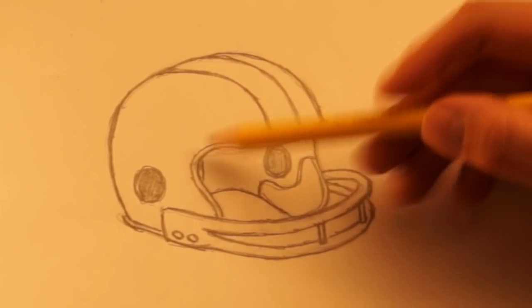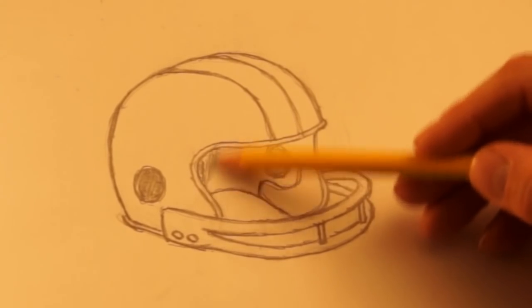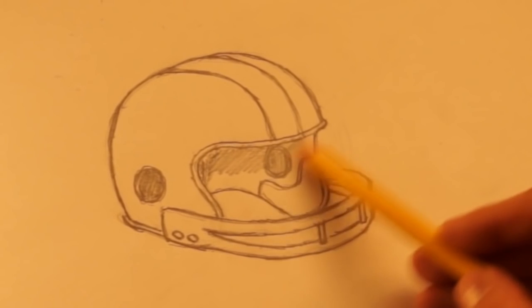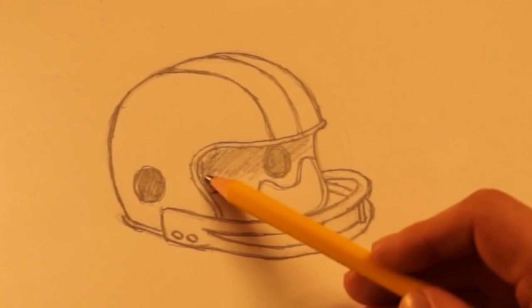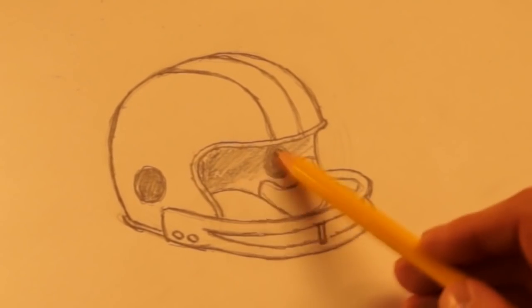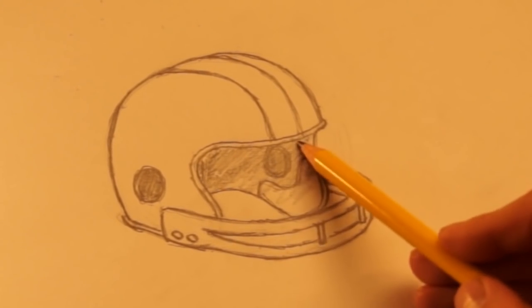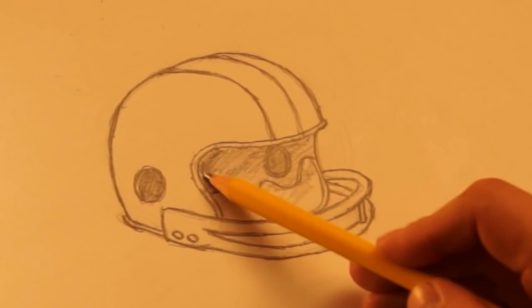I'm going to shade inside the helmet. I can use the side of the pencil and just shade. Because the way it hangs over everything here, there is a bit of a shadow inside. A little darker towards the top.